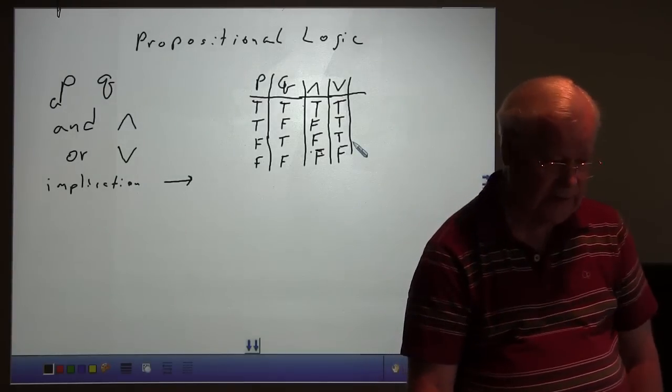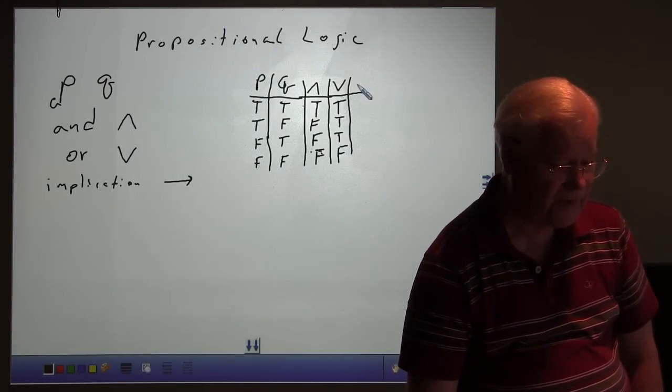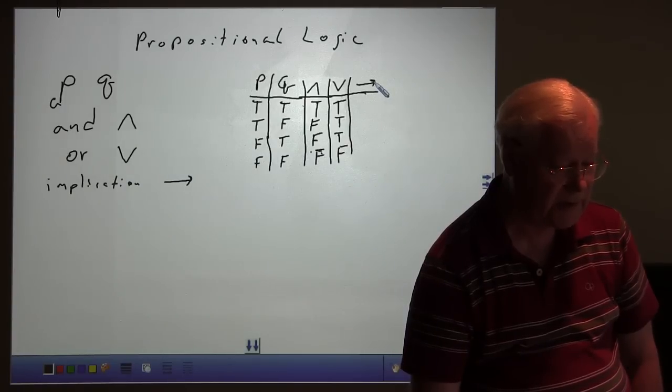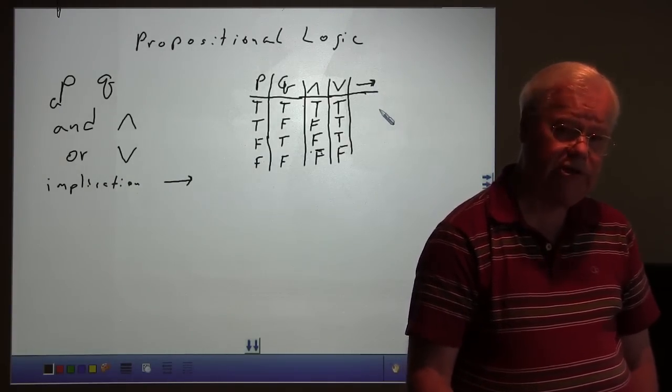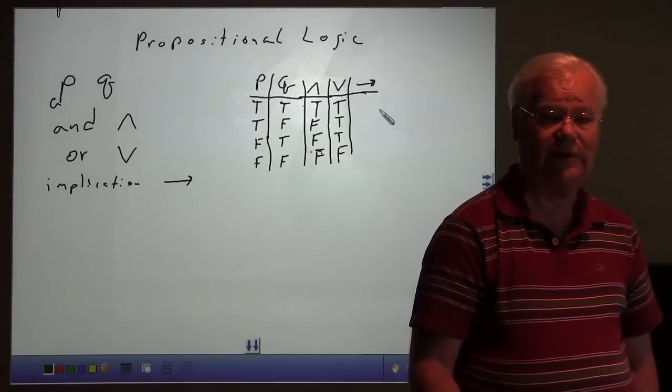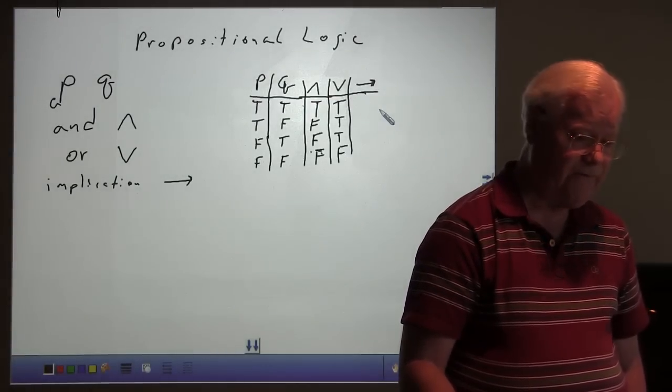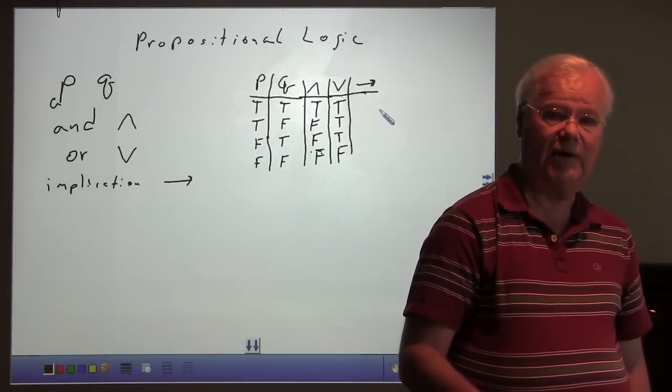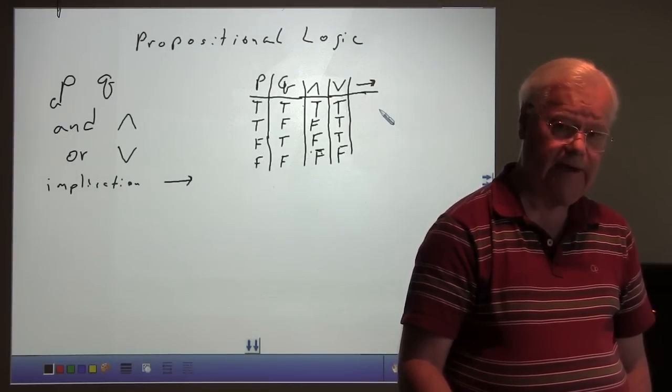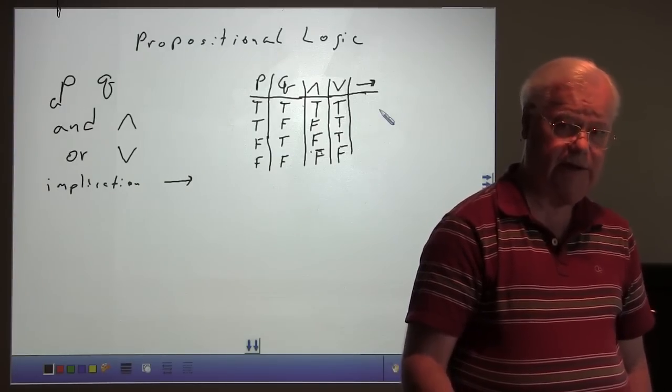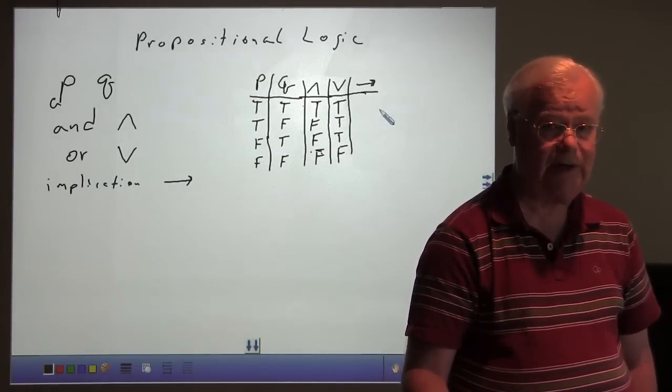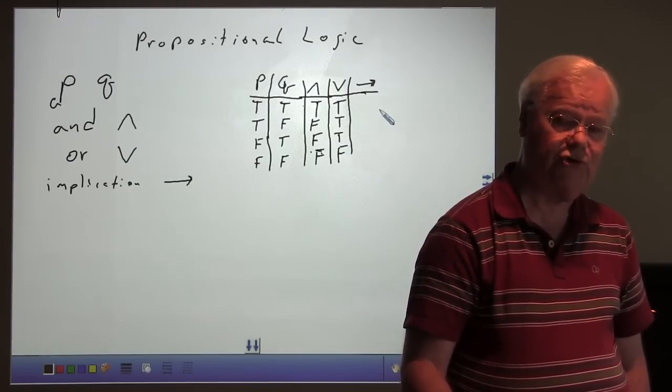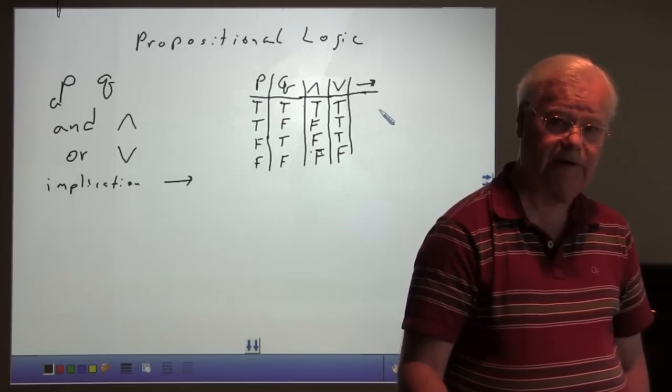The implication, and this is not as intuitive as AND and OR. AND and OR really follow very closely to what we would expect from their English definitions. But the implication is really only understandable if the first part of it is true. For instance, if I said, if today is Tuesday, then I will eat at McDonald's. If it is Tuesday, and I eat at McDonald's, then that's true. If it's Tuesday, and I don't eat at McDonald's, then it's false. So for the antecedent, or the first part of the statement, being true, then it depends on the second part as to whether that's true or false.